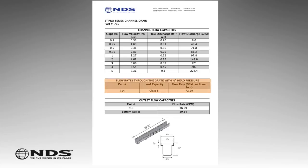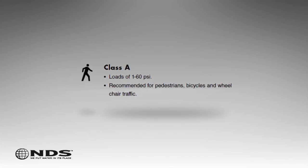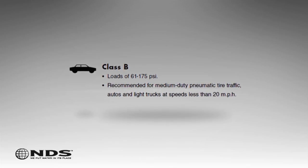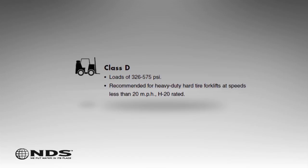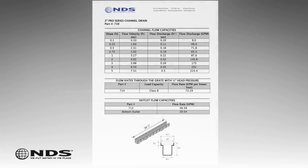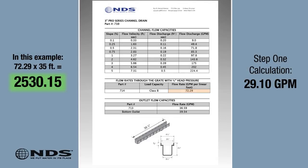Step 4: The flow rates through the grates table shows the load capacity for each grate and the flow rates for each linear foot of the grate. Make sure the load capacity of the grate meets or exceeds the expected loads on the channel. Load capacities are divided into the following classes: Class A, up to 60 pounds per square inch; Class B, up to 175 pounds per square inch; Class C, up to 325 pounds per square inch; Class D, up to 575 pounds per square inch. After selecting a grate that can support the expected load, multiply the value found in the flow rate GPM per linear foot column by the entire length of your channel project. This is the total flow capacity of the grates. If the total flow capacity of the grates is less than the calculated runoff in Step 1, choose a larger channel. If the flow capacity of the grates is greater than the calculated runoff, move down to the next table.